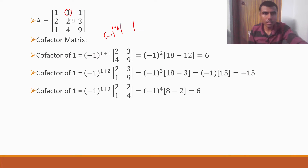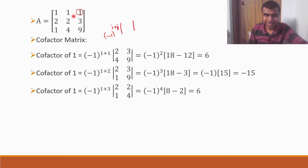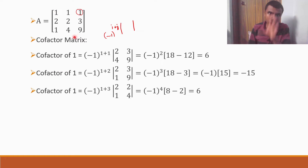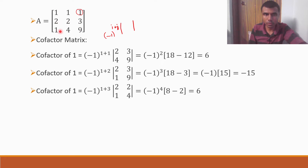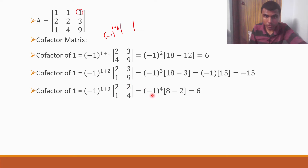Now cofactor of the third element in row 1 (position row 1, column 3): (−1)^(1+3) × det[2 2; 1 4] = (+1) × (8 − 2) = 6. Since (−1) to an even power is +1, we get 6.